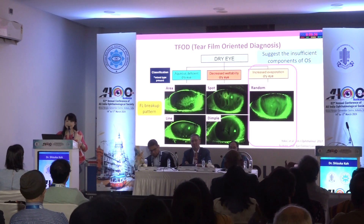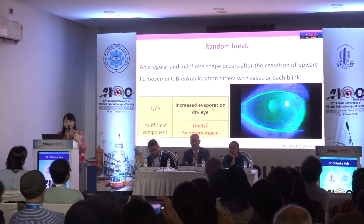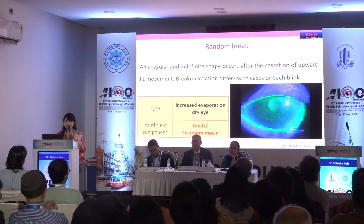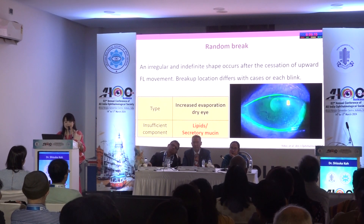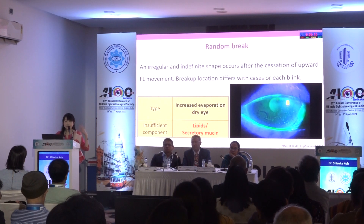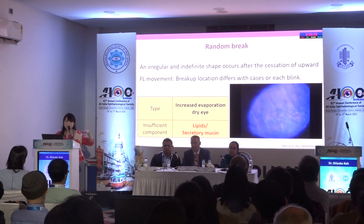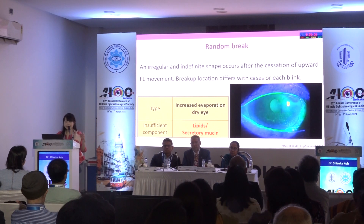Let's move on to increased evaporation dry eye. Random break — this is an increased evaporation dry eye. The insufficient component is usually lipid, associated with MGD. An irregular, indefinite shape occurs after the cessation of upward movement. The key point is you can see the break-up right after all movement has finished. Of course, you can see this random break even in normal eyes.